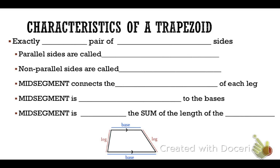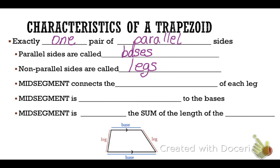A trapezoid has exactly one pair of parallel sides. If you look at the diagram at the bottom, the parallel sides are called bases and the non-parallel sides are called legs.